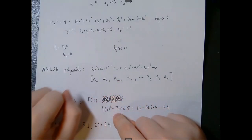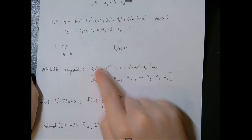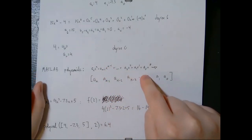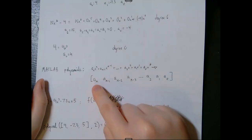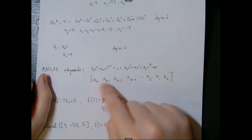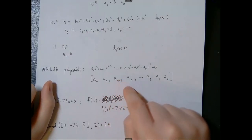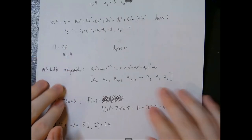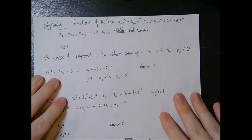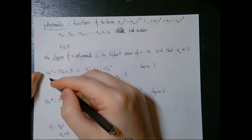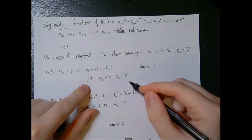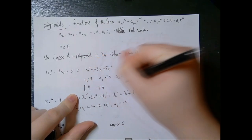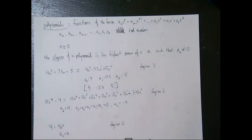If you have a polynomial that looks like a_n times x to the n plus a_(n-1) times x to the n minus 1, and so on, representing this in MATLAB is as easy as making a vector with the coefficient of the nth term first, then the coefficient of the n minus 1 term, the coefficient of the n minus 2 term, and so on. The last element of this vector will be the coefficient of the x to the 0 term, and you must include all zeros. So 4x squared minus 7.3x plus 5 is represented as [4, -7.3, 5].